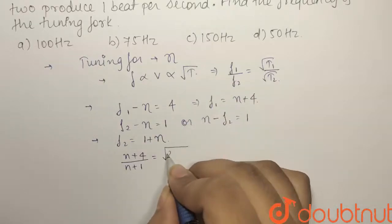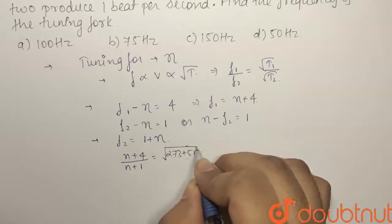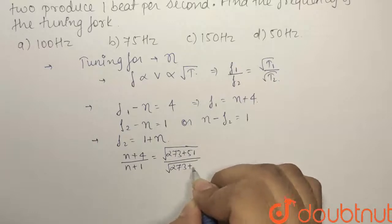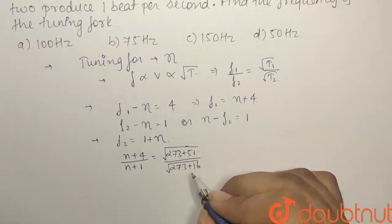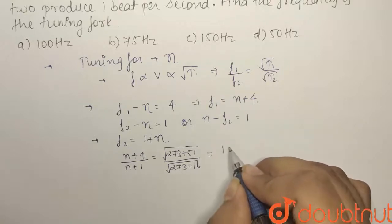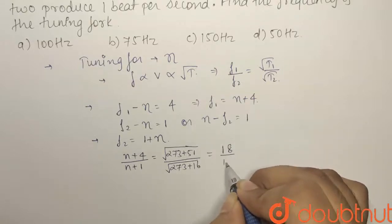Under root 273 plus 51 divided by under root 273. The final temperature is 16, so 273 plus 16. This is 289 and this is 324. It will be root, so it will become 18 by 17.